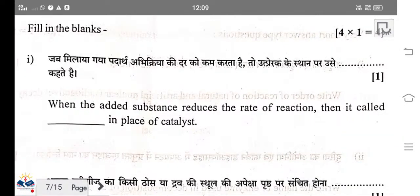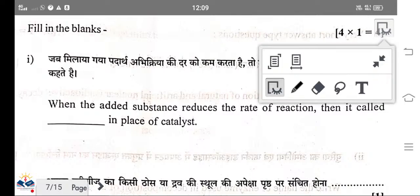When an added substance reduces the rate of a reaction, it is called a poison catalyst. A poison catalyst is a substance that decreases the rate of a catalytic reaction.